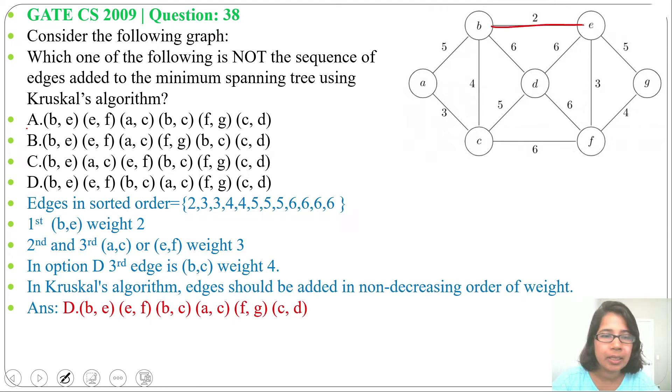First we'll include BE, then EF weight is 3, then AC weight is 3, BC weight is 4, FG weight is 4, CD weight is 5. This is a minimum spanning tree.